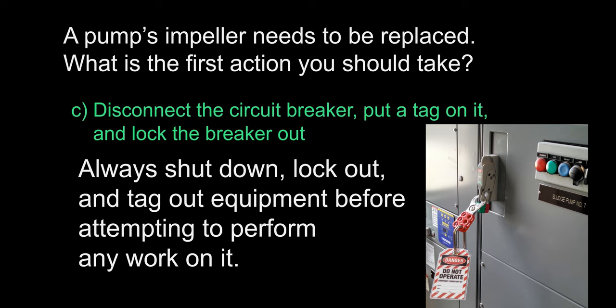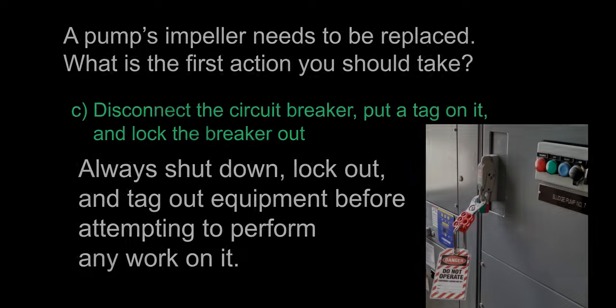The answer is C — disconnect the circuit breaker, put a tag on it, and lock the breaker out. I hope that one of the first things you're trained on at your treatment plant is the importance of lockout-tagout. You must never work on equipment until it is de-energized and only you have the power to turn it back on when work is finally complete. Failing to do so can lead to severe injury or death, with many a finger having been lost this way.